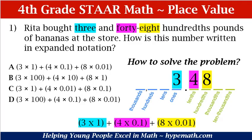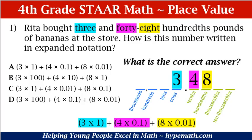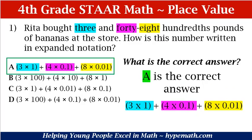We have 3, and that 'and' means there's a decimal point, then 48 hundredths. Our 3 is in the ones place, so that's 3 times 1. Our 4 is in the tenths place — with the 'th' — so that's 4 times 1 tenth. Our 8 is in the hundredths place, so that's 8 times 1 hundredth. So our expanded notation is 3 times 1 plus 4 times 1 tenth plus 8 times 1 hundredth. Looking at our answer choices, if you said A, you are absolutely correct — it matches our answer exactly. That is 3 and 48 hundredths. Good job.